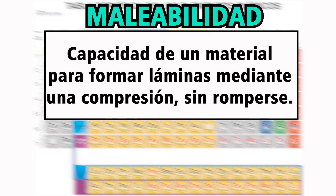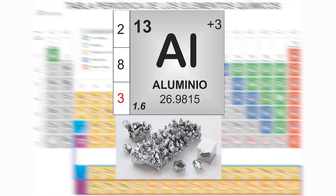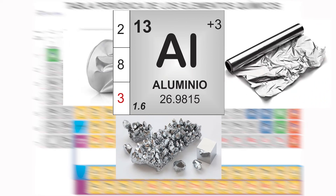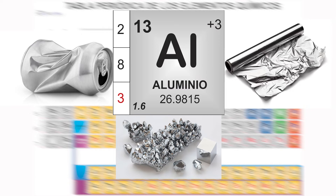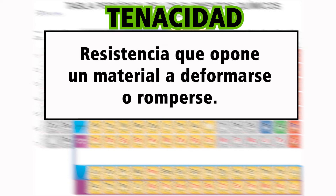Uno de los metales más maleables es el aluminio. A esto lo podemos deformar aplicándole una fuerza de compresión con nuestras manos o con nuestros pies. Y este no se va a romper tan fácilmente, a menos que tengamos la intención de hacerlo. Otros metales requieren herramientas, aparatos o máquinas más pesados para poder comprimirse, dependiendo de su tenacidad, la cual se define como la resistencia que opone un material, en este caso metal, para deformarse o romperse.